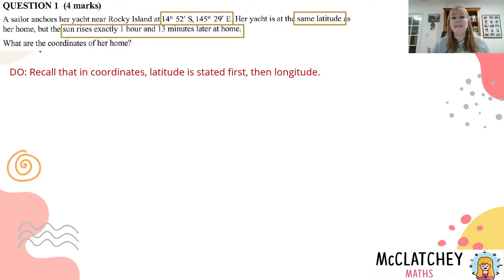Now that means that the 14°52'S is the latitude, and that's the same latitude for both locations. So they're common to one another. We know that first half of the coordinates is going to be the same for the yacht and the house, so we don't have to do anything to that one. We can leave that as it is.